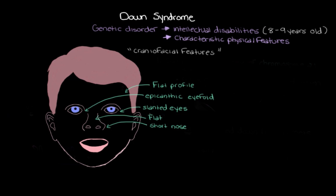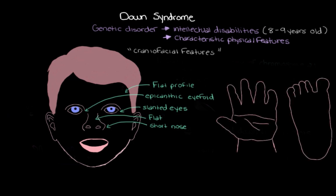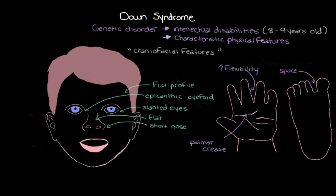Looking at the rest of the body: in the creases of the palm, the palmar crease is actually one single crease, whereas in someone without down syndrome it is separated. In the feet, there's usually a big space between the first and second toes. In general, the joints are often a lot more flexible than normal, bending and extending much further than expected. The muscle tone — the tension we have in our muscles at all times — is often really low, so the muscles can feel quite floppy.